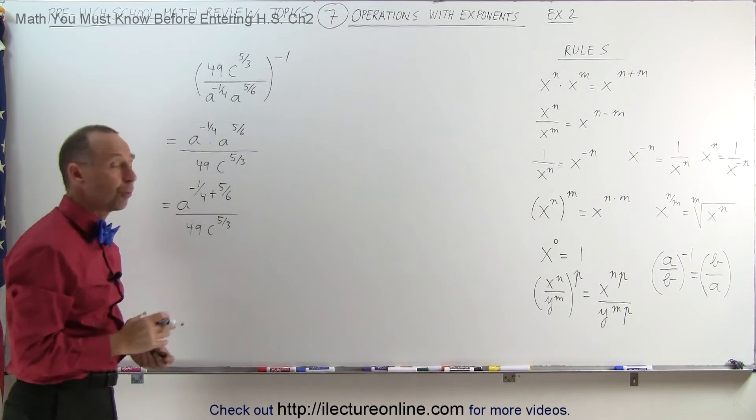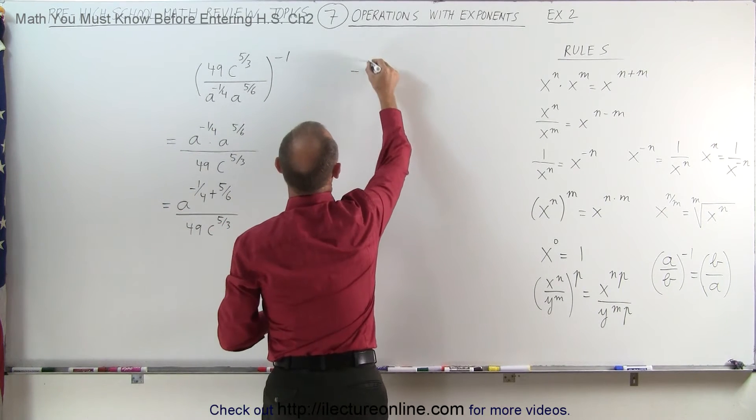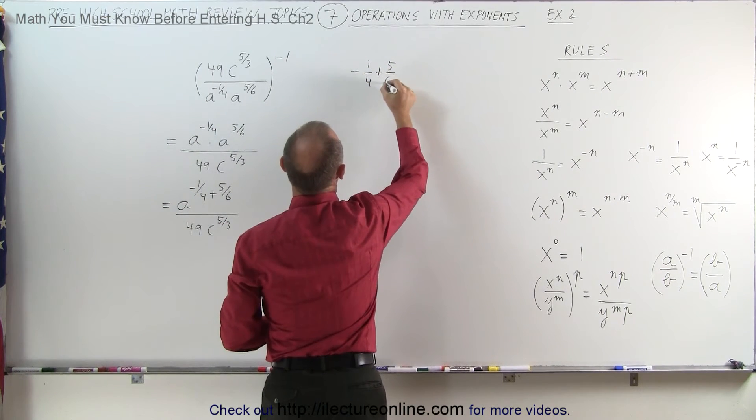Now, how do we add negative 1 fourth plus 5 sixth? Let's do that on the side over here. Negative 1 fourth plus 5 over 6.